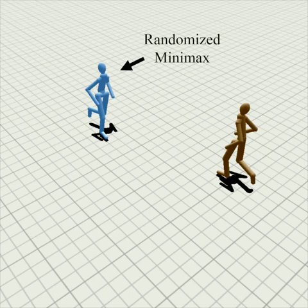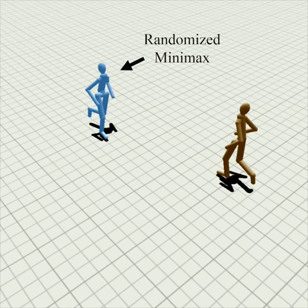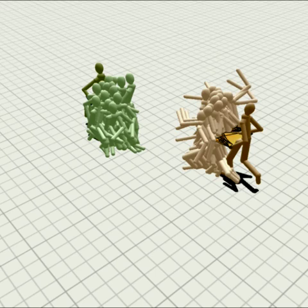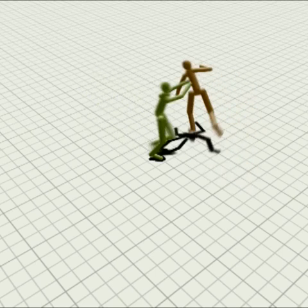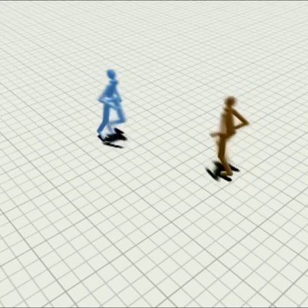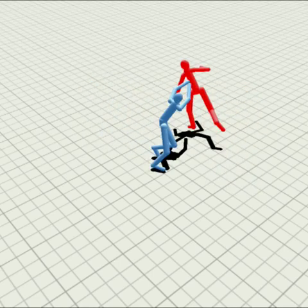Since randomness is a necessity in video games, some people have considered adding randomness on top of a minimax approach. Although this is tempting, it is difficult to do correctly, as the optimal degree of randomness changes depending upon the situation. For instance, here the opponent has many available actions but only one makes sense. Even if we select randomly from only the top three actions, this leads to unrealistic behavior. Our method deals with these situations correctly.